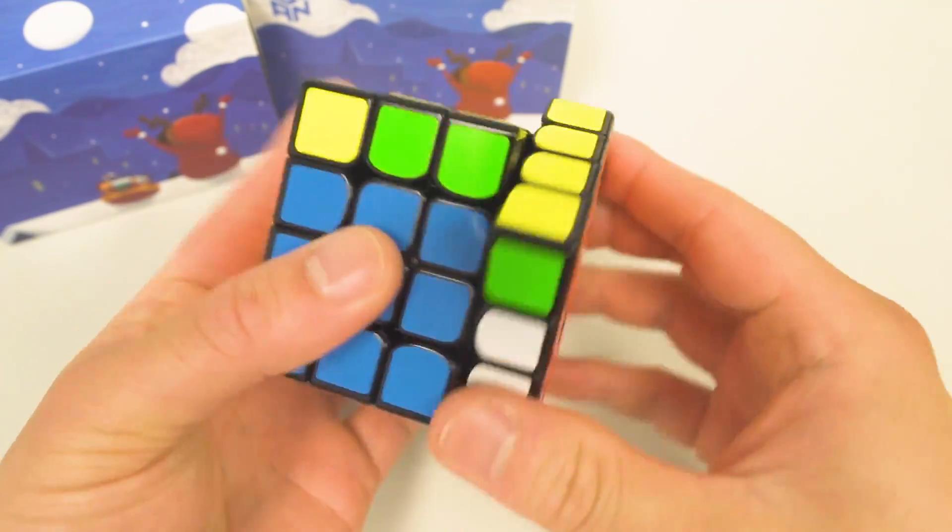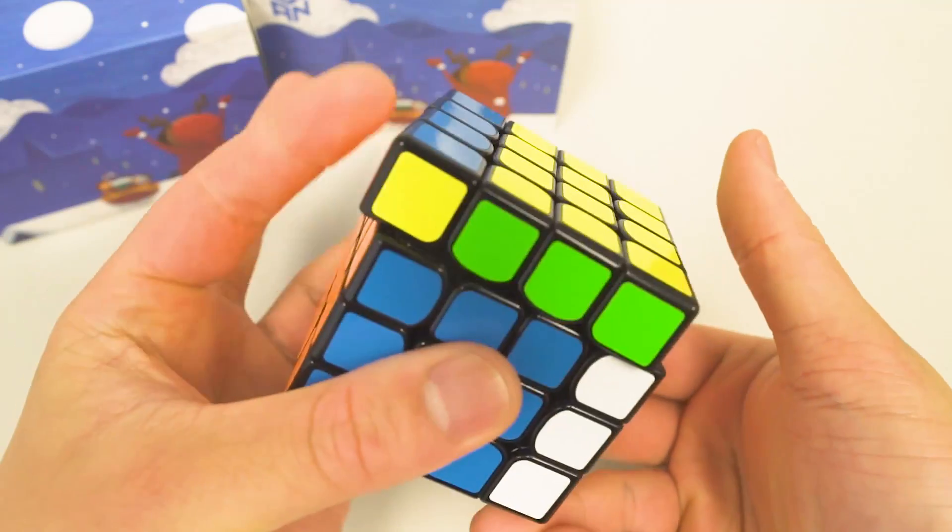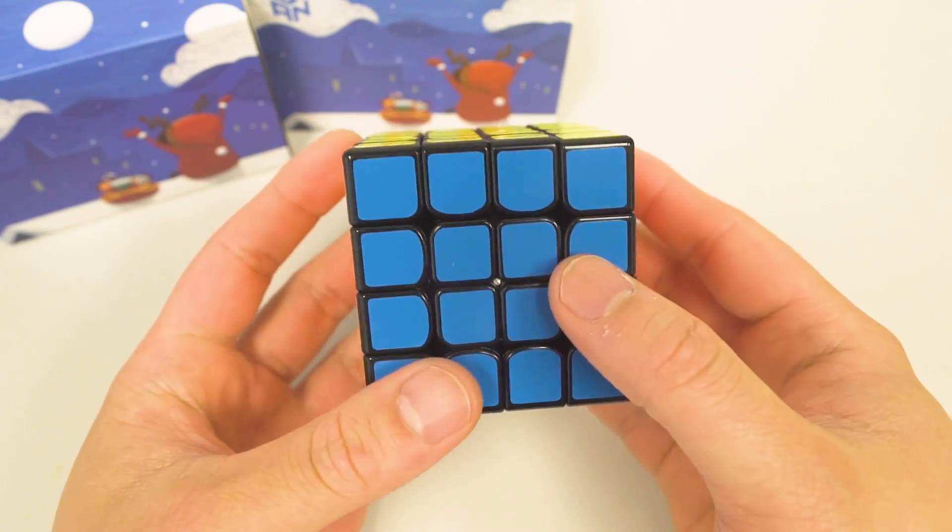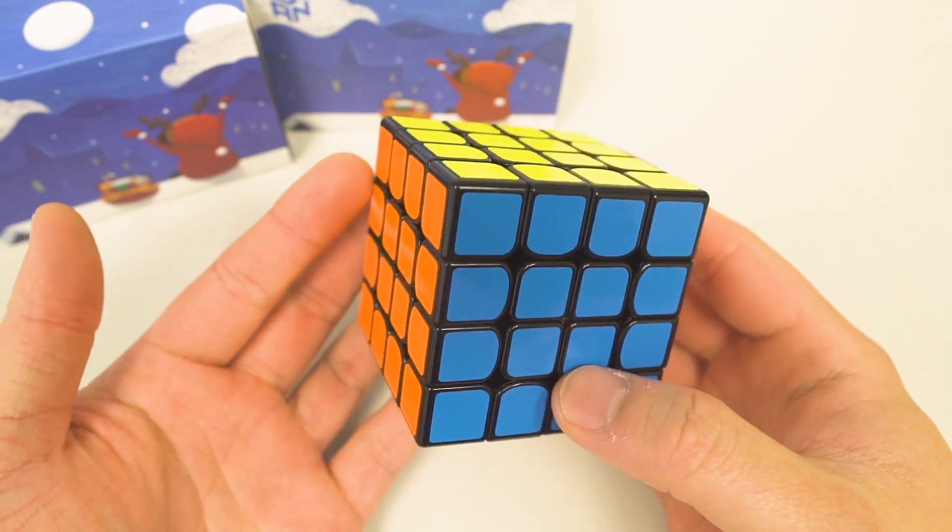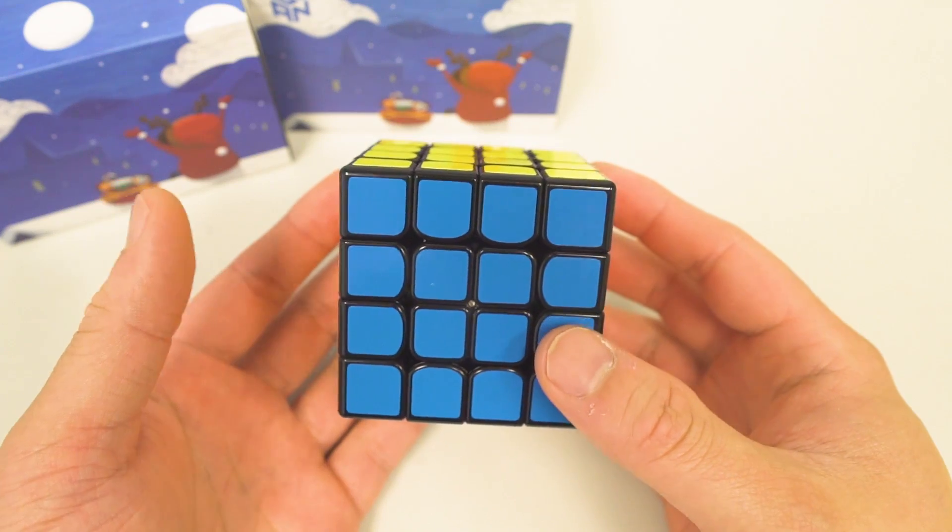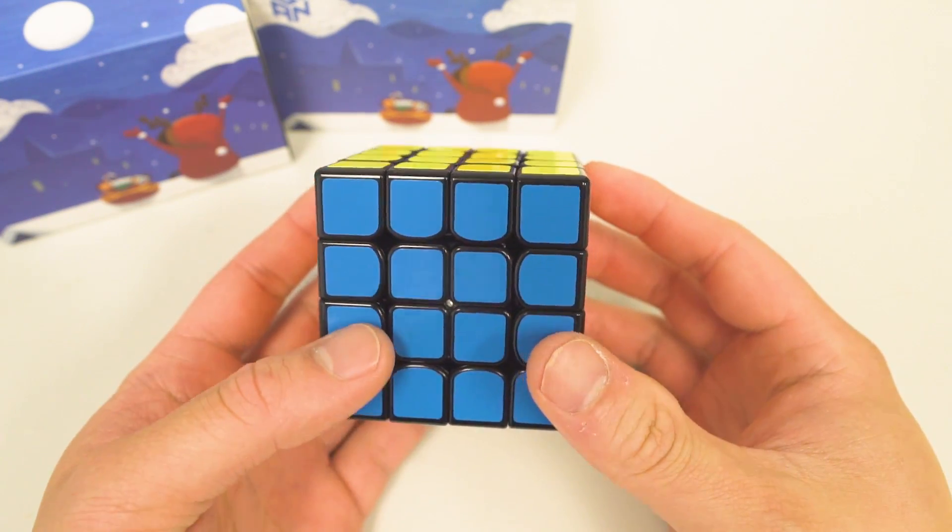The outers are really light and it's somewhat flexy. I actually enjoy doing the 3x3 stage on this cube a lot more than I do on other cubes. Every time I get to that stage I get a little excited because the 3x3 stage is really good.